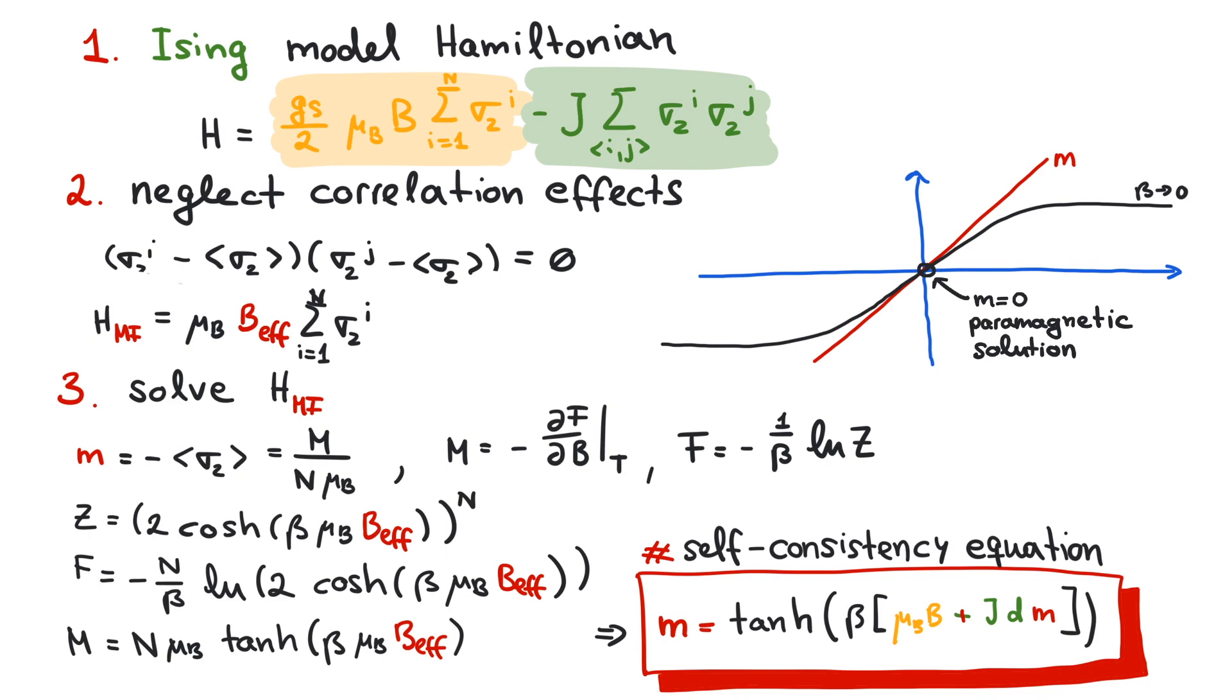For low temperatures, or strong coupling J, the hyperbolic tangent gets intercepted at three points. M equals plus and minus M0, that is finite magnetization, and M equals 0, which is the trivial, unstable solution. The system is in a ferromagnetic phase.